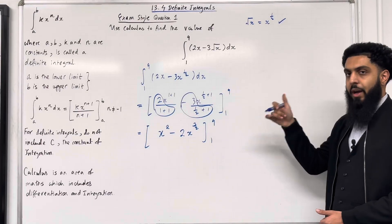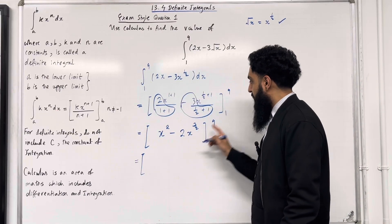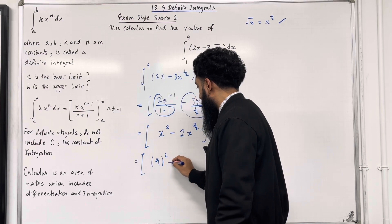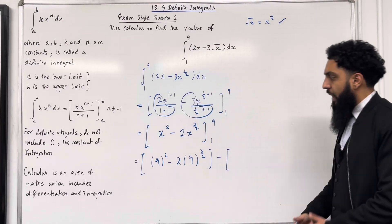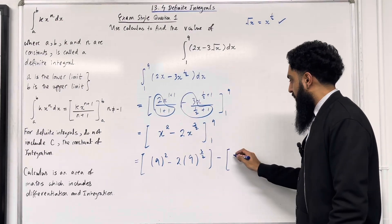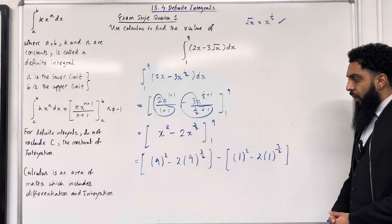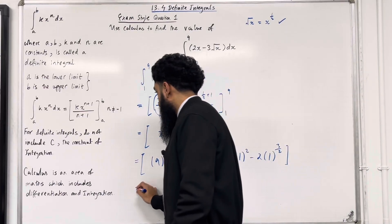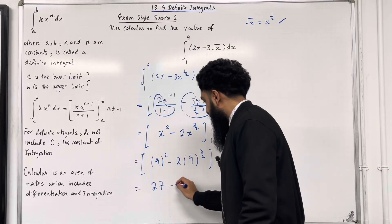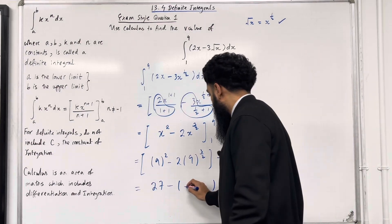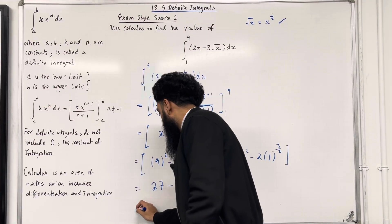We're going to start by substituting the upper limit — you must always first substitute the upper limit. So, open square bracket, replace the x's with 9: that would be 9 squared minus 2 lots of 9 to the power 3 over 2. Close square bracket, minus, substitute the lower limit, replace the x's with 1: we've got 1 squared minus 2 lots of 1 to the power 3 over 2. Close square bracket. We can put both of these into our calculator. The first bracket gives 27, the second gives minus 1. So 27 minus minus 1 is 27 plus 1.